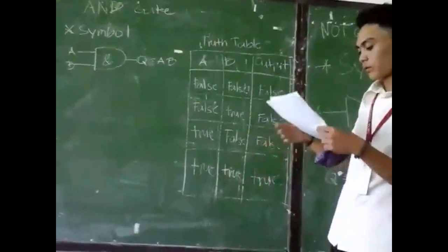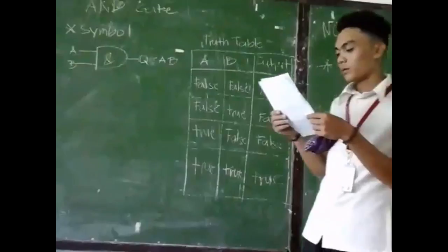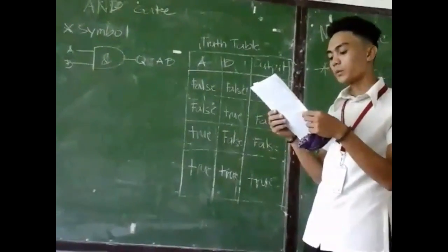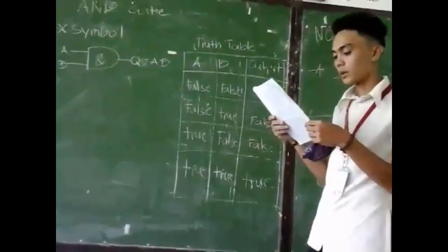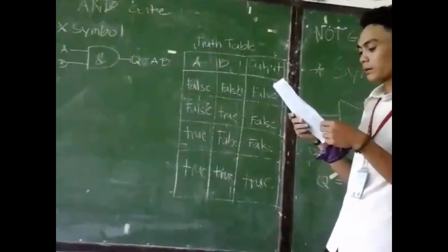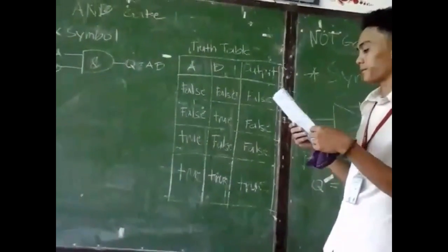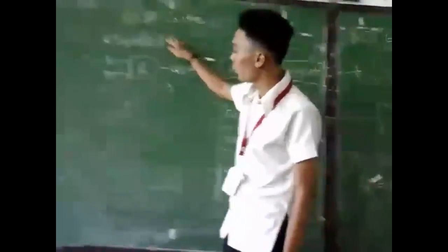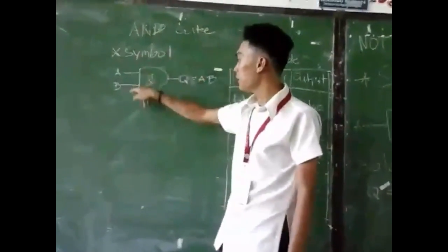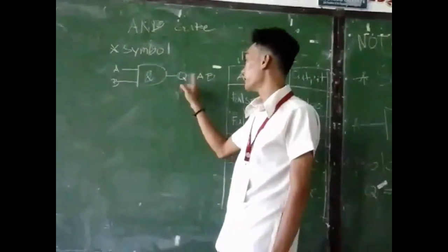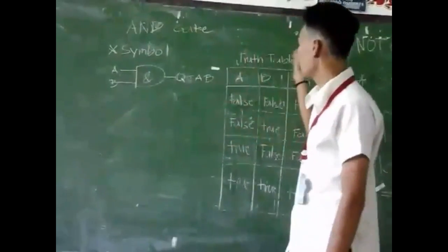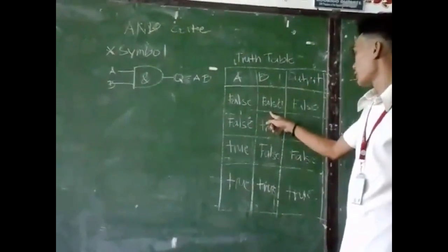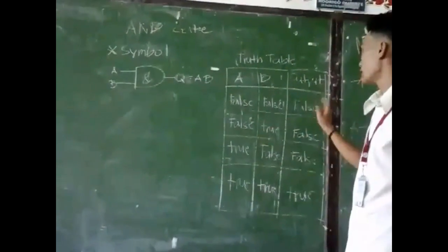For example: true, true equals true. Then the output of AND Gate is false. The truth table for AND Gate with two inputs appears to the right. Here's the symbol AB, and the output of AB is true. If false, false — the output is false.